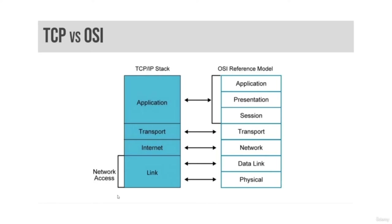The TCP/IP model is a popular network model created by DARPA in the 1970s. TCP/IP is an informal name, named after the first two protocols created. The formal name is the Internet Protocol Suite. The TCP/IP model is simpler than the OSI model. While TCP and IP receive top billing, TCP/IP is actually a suite of protocols including UDP and ICMP, among many others.